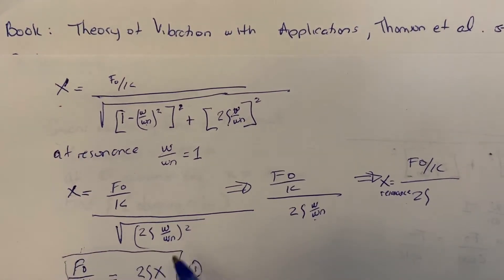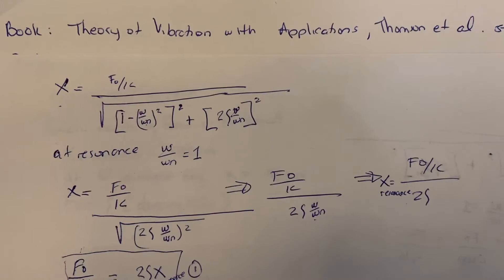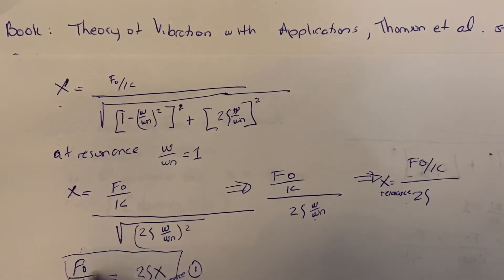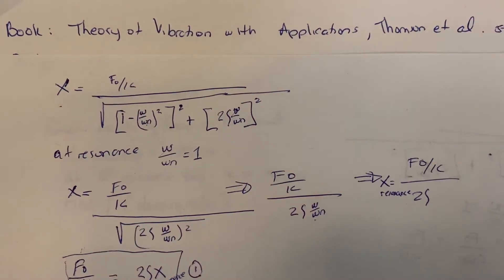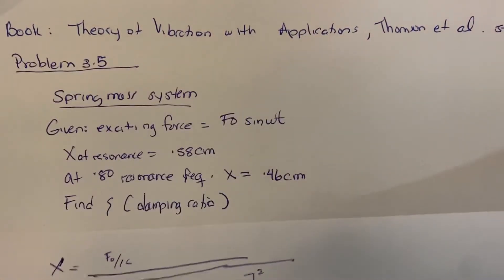In Equation 1, the amplitude at resonance, x, is given as 0.58 centimeters. The damping ratio is what we are looking for, so we leave Equation 1 here and now look for the second condition.